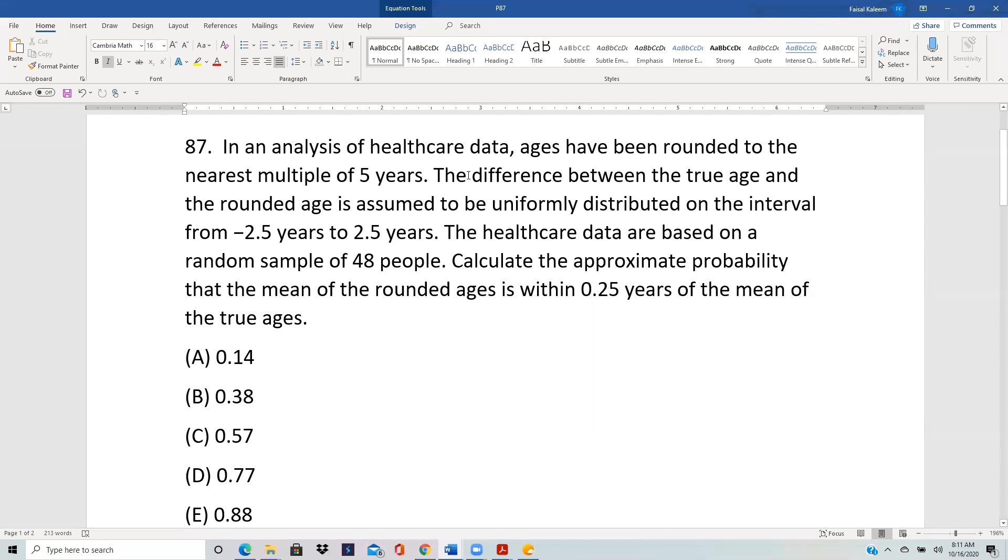In an analysis of healthcare data, ages have been rounded to the nearest multiple of five years. The difference between the true age and the rounded age is uniformly distributed from negative 2.5 to 2.5. The healthcare data are based on a random sample of 48 people. Calculate the probability that the mean of the rounded ages is within 0.25 years of the mean of true ages.